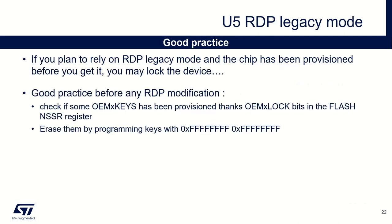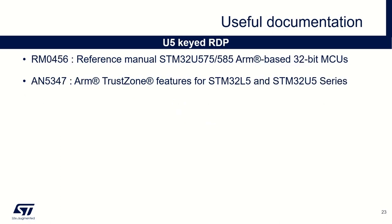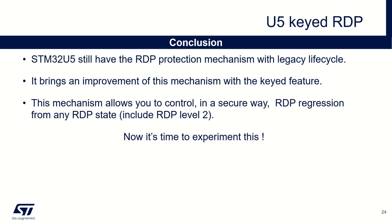If you are using the U5 RDP legacy mode, before any RDP level change, I would recommend ensuring the STM32 has not been provisioned previously by anybody. For this, you just need to check the OEM lock bits inside the flash NSSR register. The other possibility is to systematically erase the OEM keys. Some useful documentation: the reference manual of the STM32U5, and also application note 5347, which fully describes this feature. As a conclusion, STM32U5 still has the RDP protection mechanism with legacy lifecycle, but it brings an improvement with the key features. This mechanism allows you to control in a secure way the RDP regression from any RDP state, including RDP level 2. Thank you.